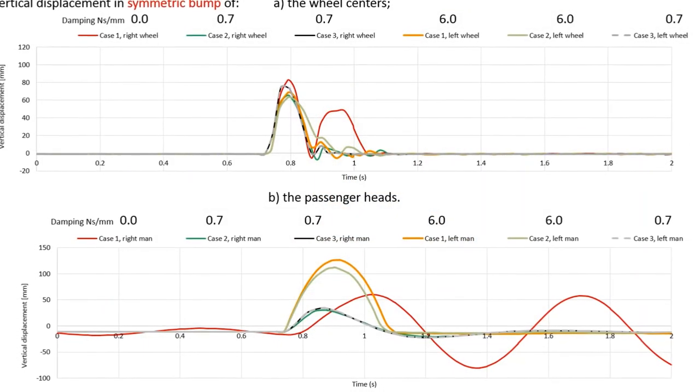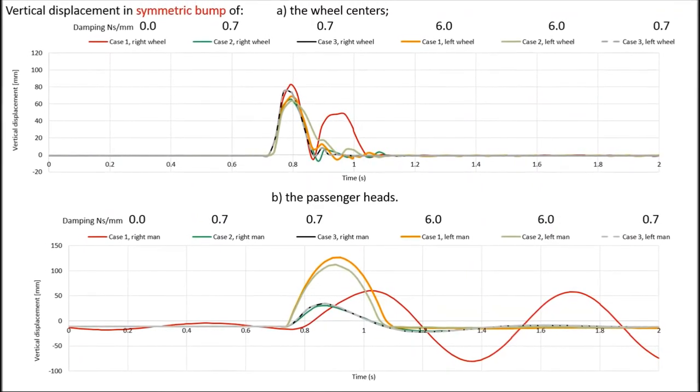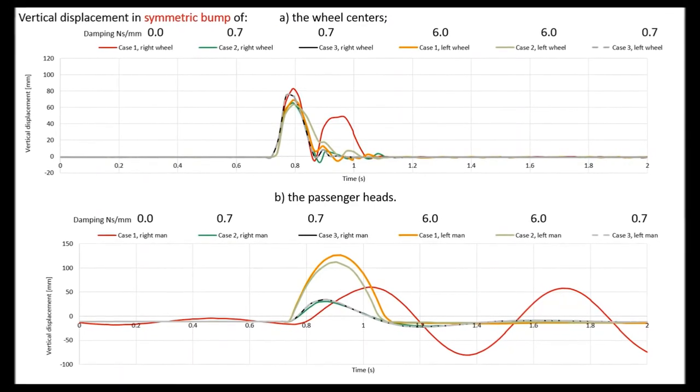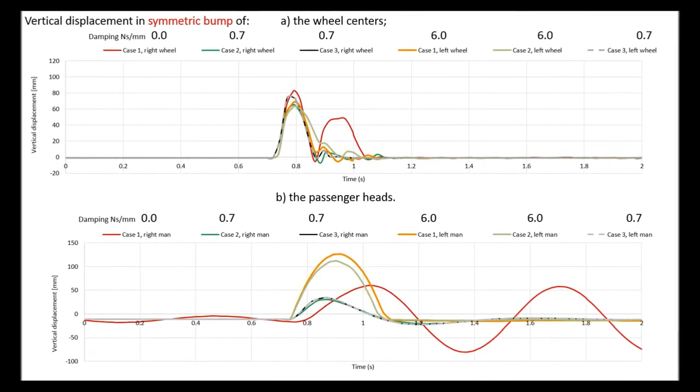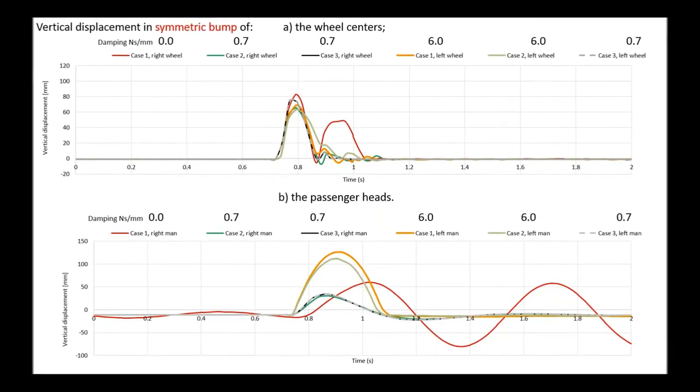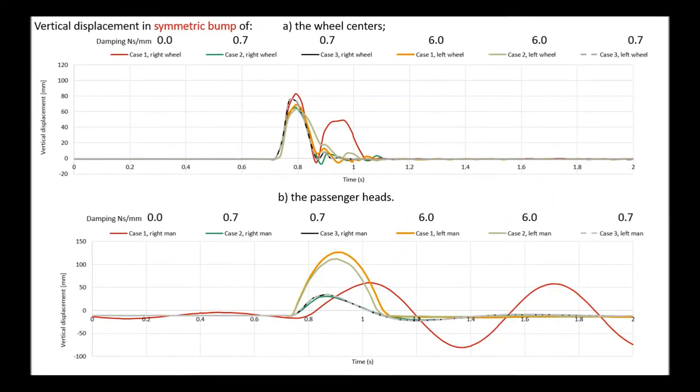Graphs show the vertical displacement of the wheel centers and passenger heads in symmetric bump. As the wheels are concerned, the maximum height varies around 60-80 mm in all cases, without dramatic differences between them. As the passengers are concerned, lower figure, on the contrary, the damping coefficient has a strong influence.